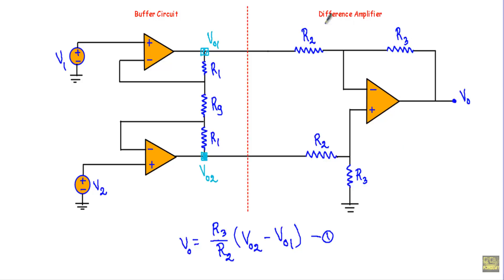If you don't know anything about the difference amplifier, I request you to check one of my previous videos regarding the difference amplifier or operational amplifier subtractor circuit. So this is the output voltage equation — let's call this equation number one. In this unit we have two buffer circuits.